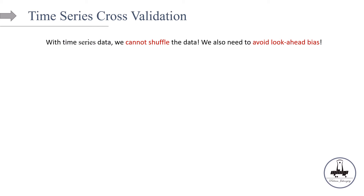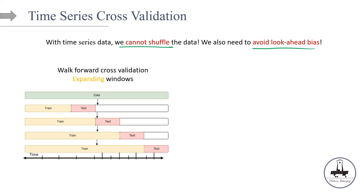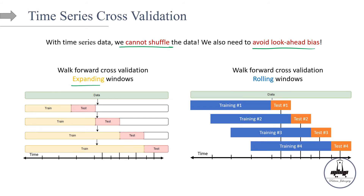But this is not necessarily the case with time series. For time series, we have to do time series cross-validation, because with time series we cannot simply shuffle the data. We also need to make sure that we are avoiding the look-ahead bias — we need to make sure that by the time we are making predictions, the future data is not already available, so we are not cheating. Let's look at the most commonly used types of time series cross-validation: walk-forward cross-validation with expanding windows, and walk-forward cross-validation with rolling windows.